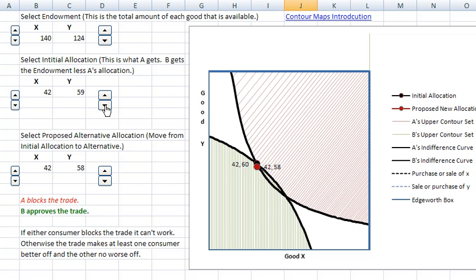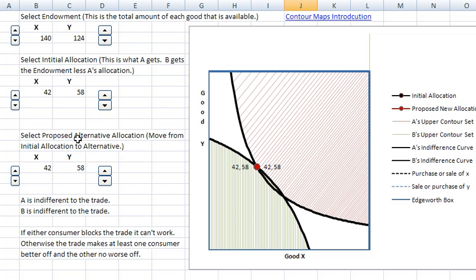And so when I finally do this, the points should be right on top of each other. Now, look what's happened. We've gotten a similar picture to before, but now the lens area has shrunk. People are better off than they were before.